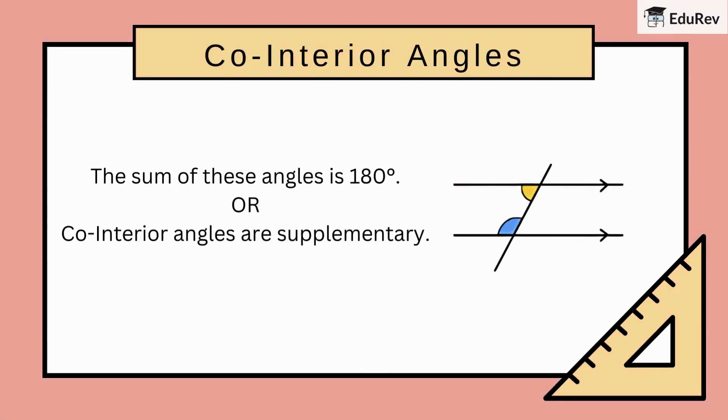Lastly, not all angle relationships are about equality. Some involve addition. This brings us to non-alternate angles, also known as co-interior angles. Let's explore how these angles work together to maintain balance.